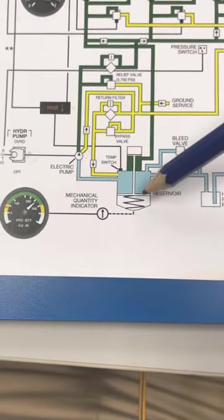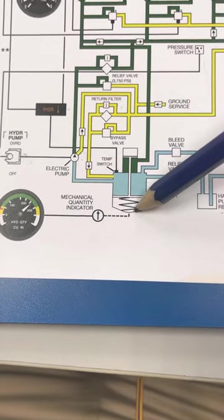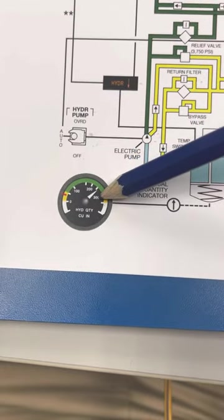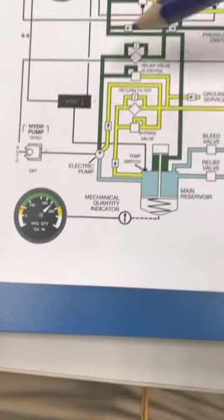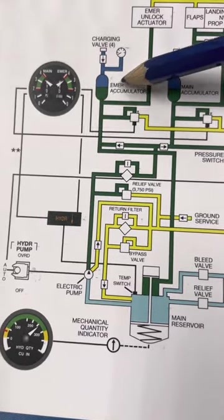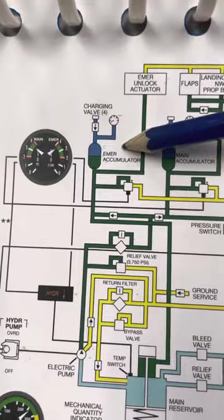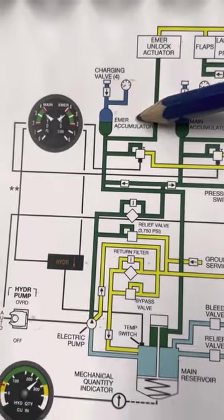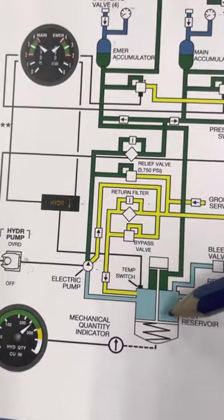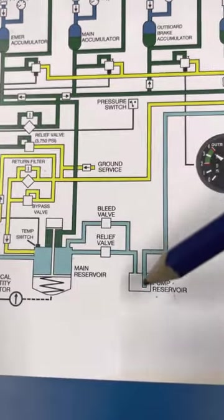The main reservoir is pressurized by both a spring that will give you information on the gauge, as well as it's pressurized by the emergency accumulator. This is the emergency accumulator's side hustle, if you will. It's the emergency accumulator's Uber. Its job is to help pressurize that main reservoir. In addition to the main reservoir and the hand pump reservoir, we have an electric pump.